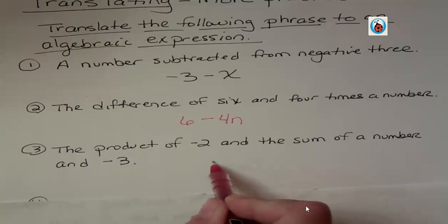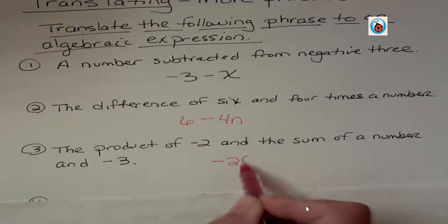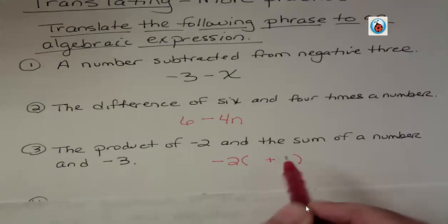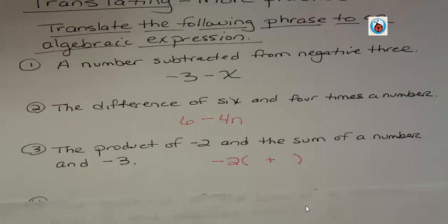So we're going to multiply negative two times a quantity that is an addition problem. That's what that looks like. The product of negative two and a sum means we're taking negative two and multiplying it times the sum.